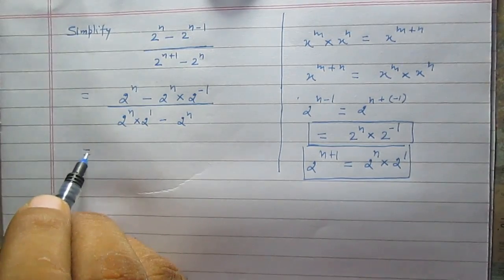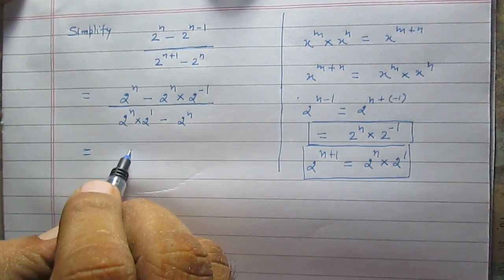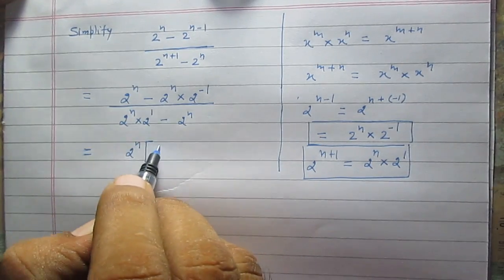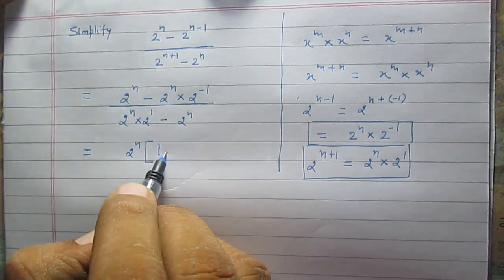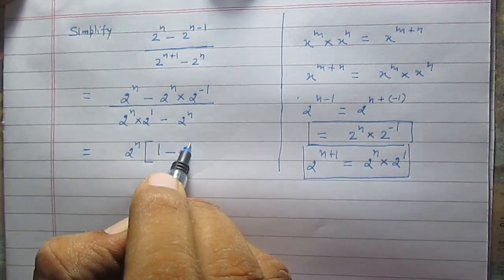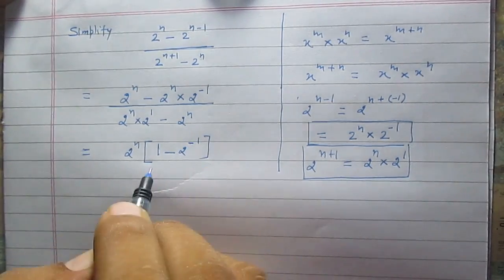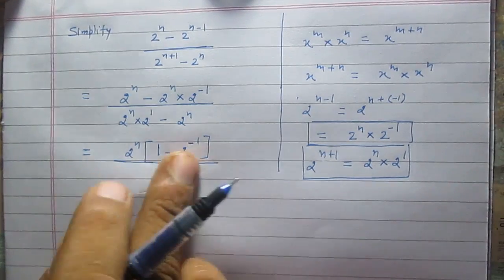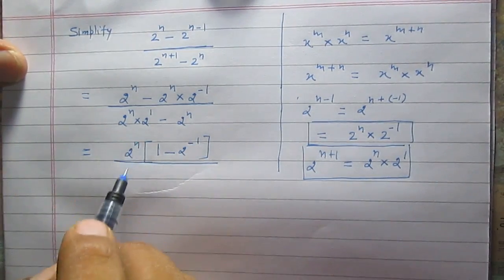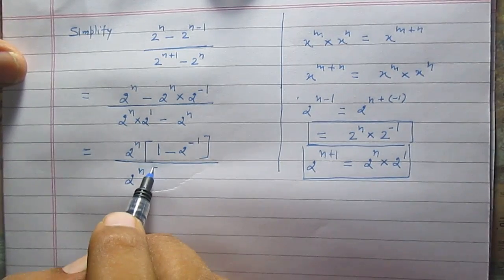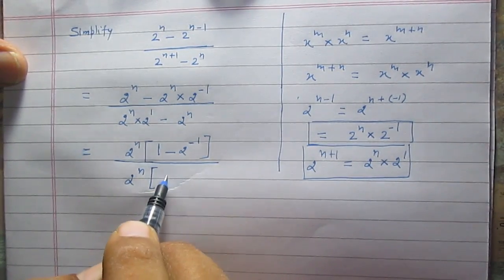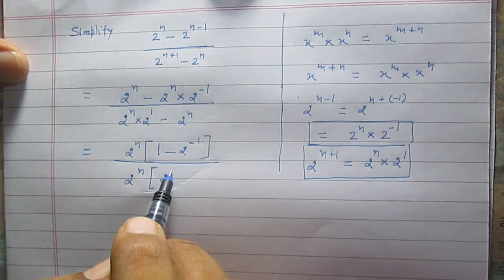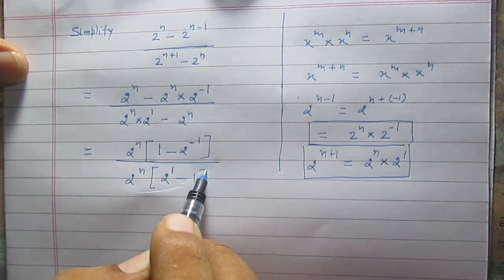So we can write 2 raised to the power n as a common term outside the bracket. Inside the bracket you will have 1 minus 2 raised to the power minus 1. This is all about the numerator. In the denominator, after taking the common term outside the bracket, you will have 2 raised to the power n multiplied by 2 raised to the power 1 minus 1.